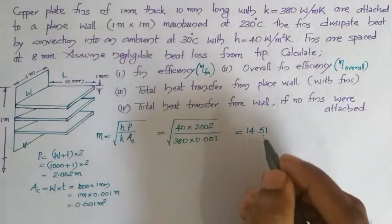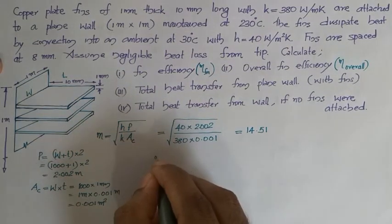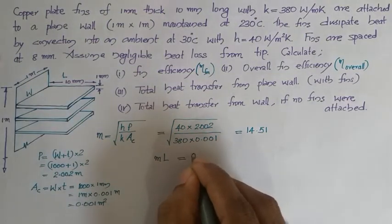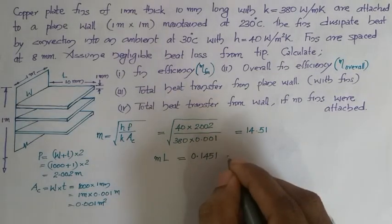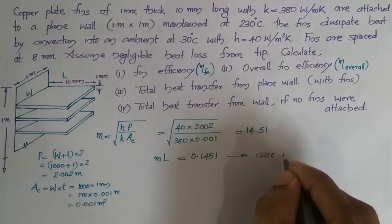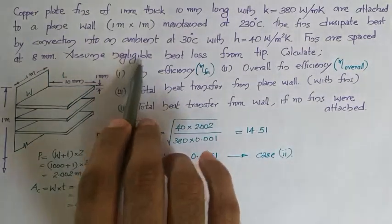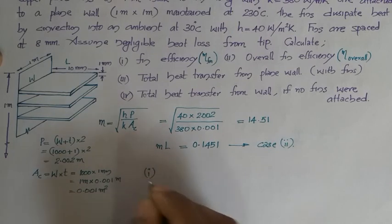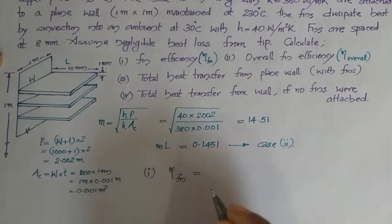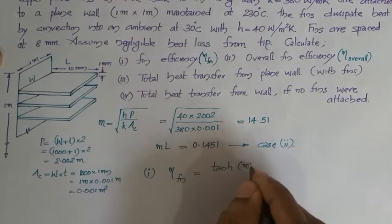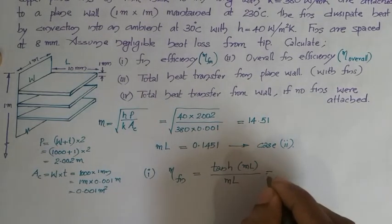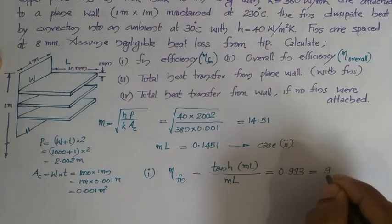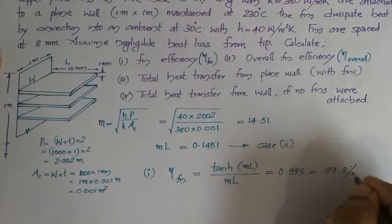Next, M·L where L = 10 mm = 0.01 meter gives M·L = 0.1451, which is less than 2.67, so this is Case 2 fins with negligible heat loss from the tip. For the first part, individual fin efficiency for Case 2 is tanh(ML) divided by ML. Substituting ML = 0.1451 gives efficiency = 0.993, which is 99.3 percentage.